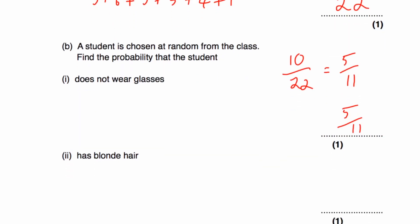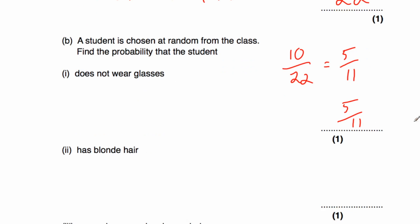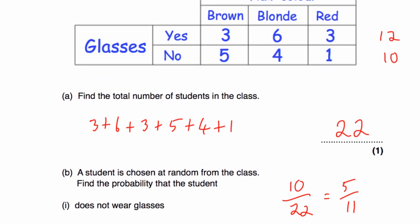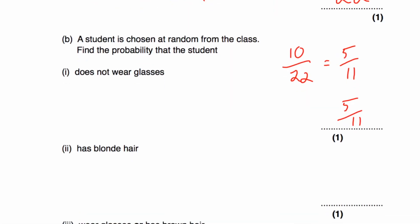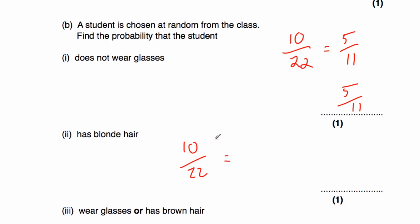The next part asks for the probability that a student picked at random has blonde hair. Six plus four equals 10 students have blonde hair out of 22 total. So the probability is 10 out of 22, which cancels to five elevenths.